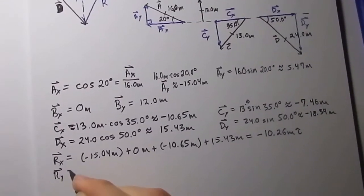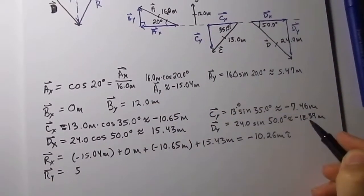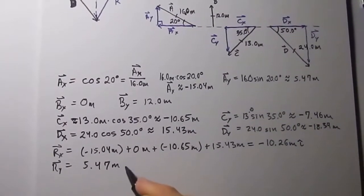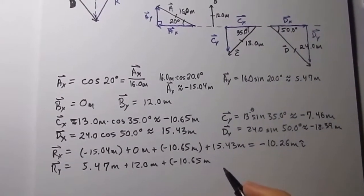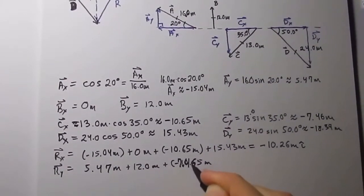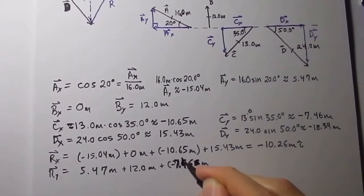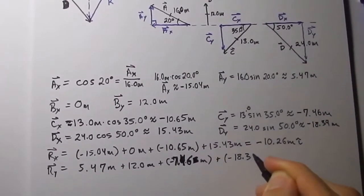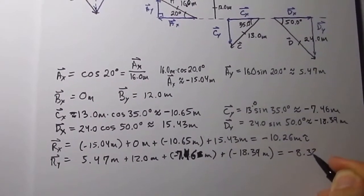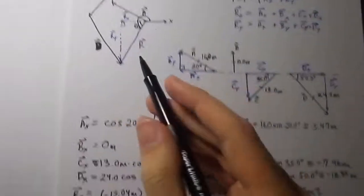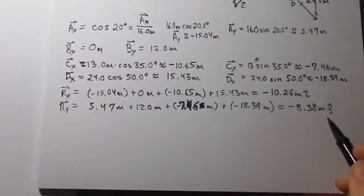Now let's find the y-component of vector R, or the resultant. So that's the sum of all the y-components, which is 5.47 meters, plus 12.0 meters, plus 7.46 meters, plus minus 18.39 meters, which equals, guess what, negative 8.38 meters j-hat, or y-hat, depending on the professor. And, is that a negative? And, indeed, it is in the negative direction. So that corroborates our mathematics.